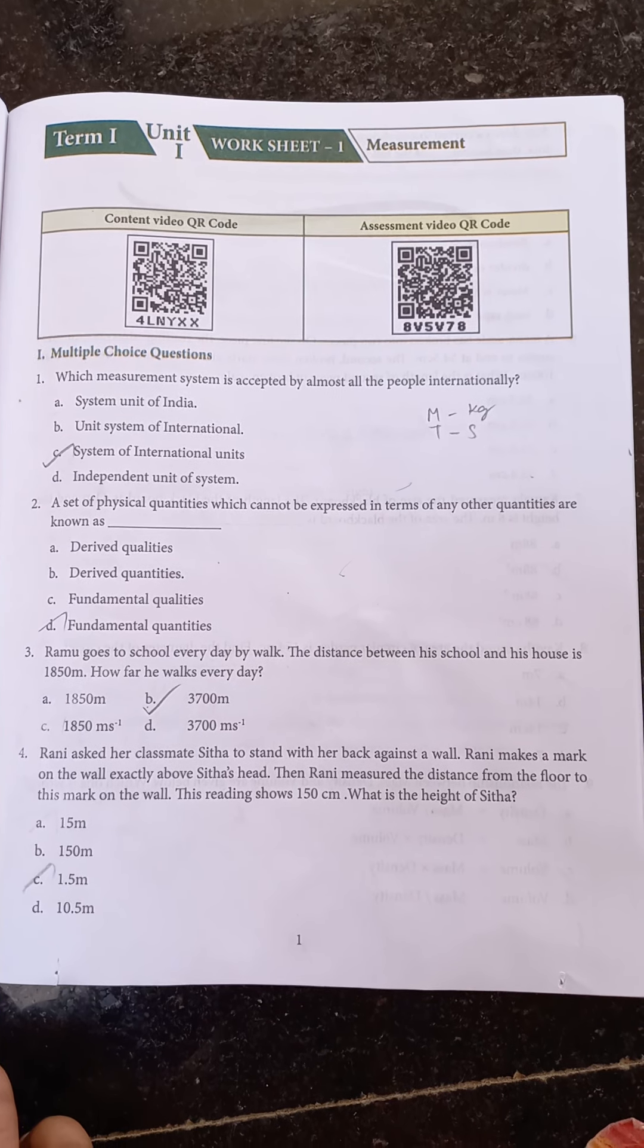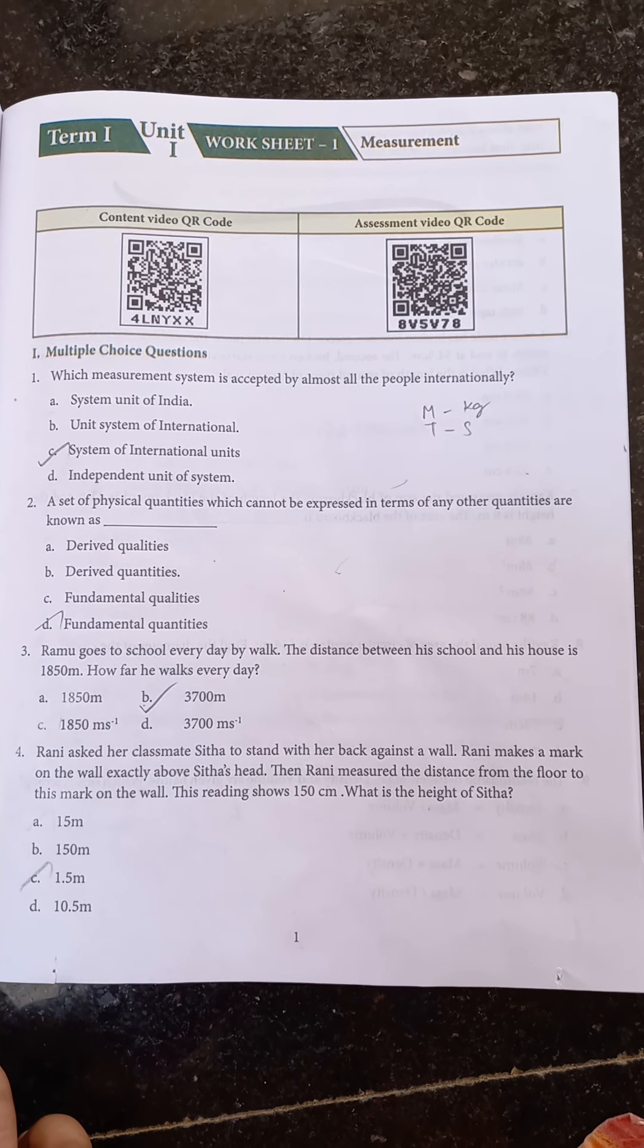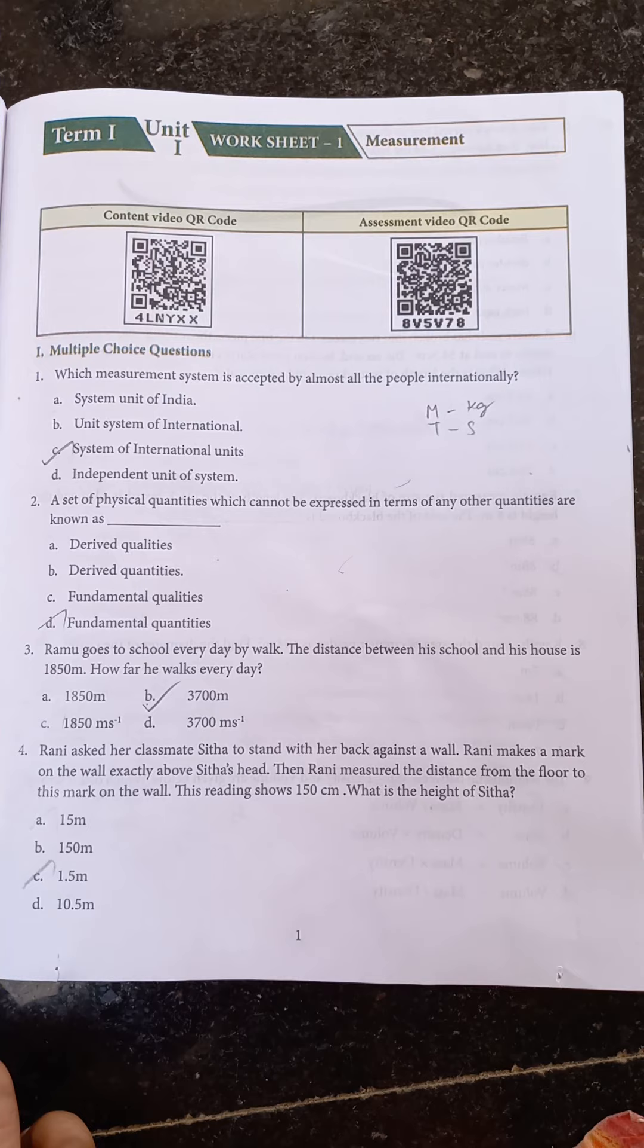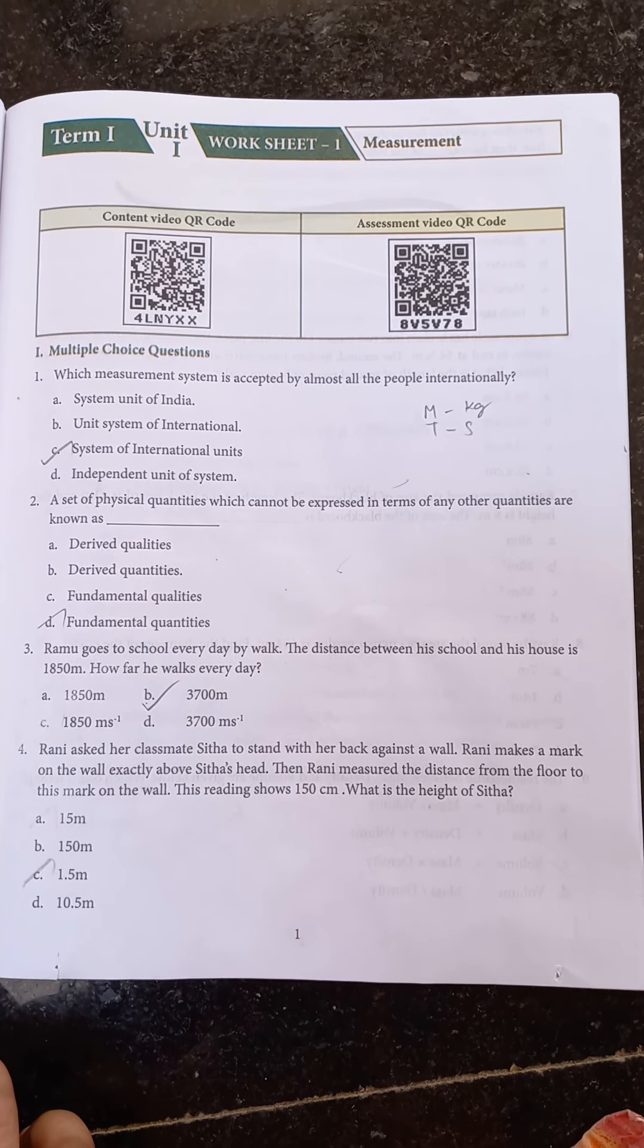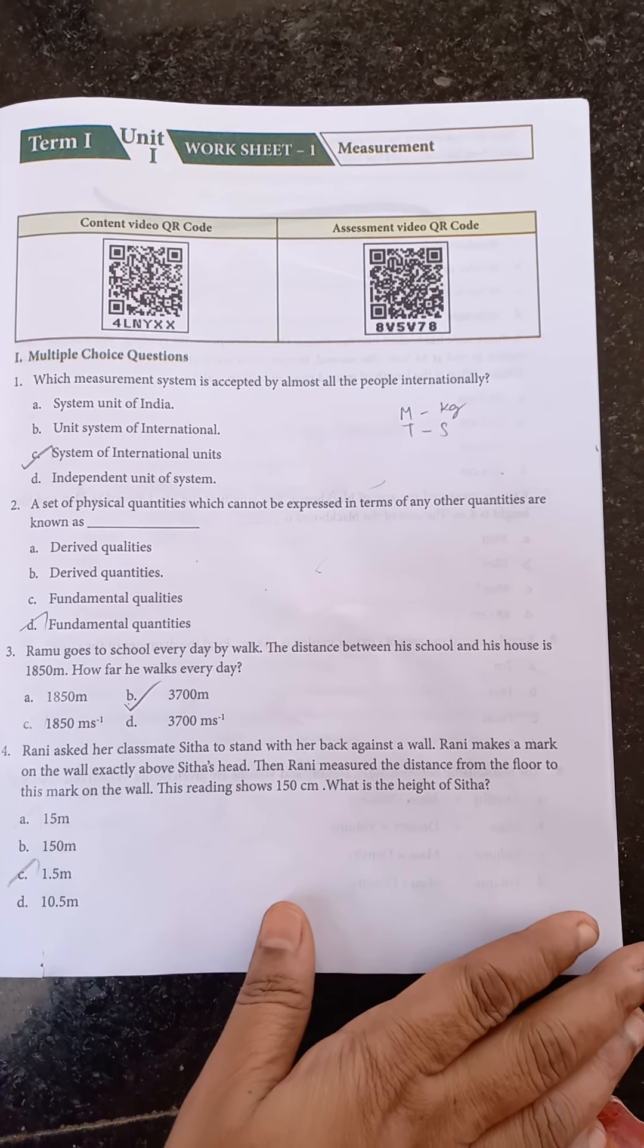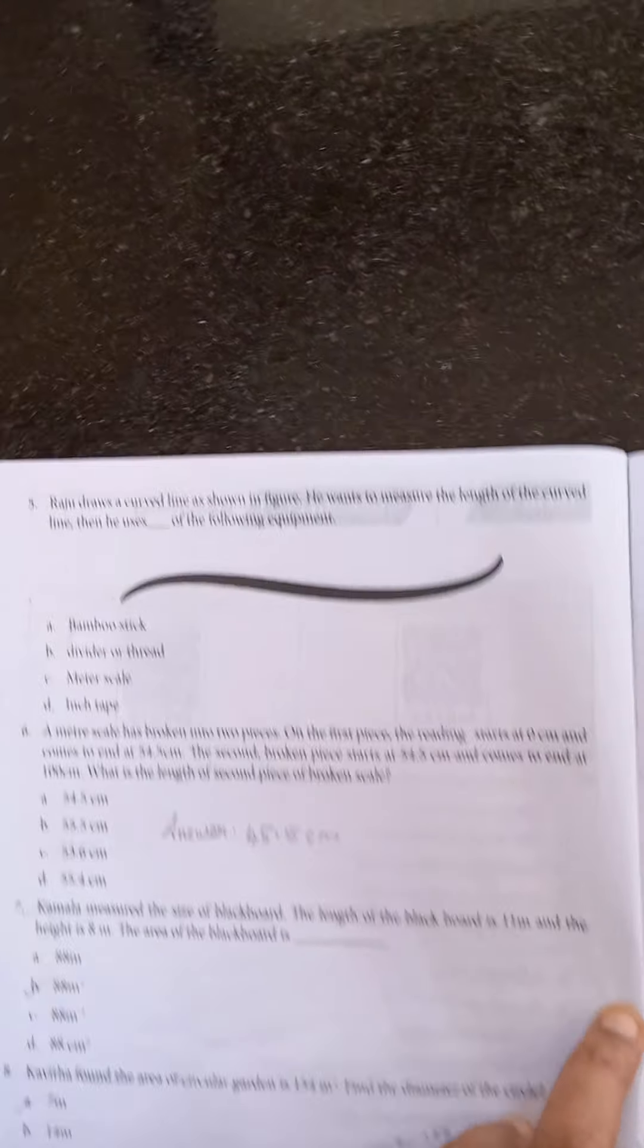Answer is 1.5 meters, because 100 centimeters equal to 1 meter, so 150 centimeters equal to 1.5 meters.